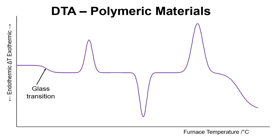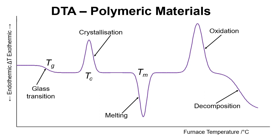There's a glass transition where the baseline changes and we refer to that as Tg for the temperature. We have a crystallization event, Tc, melting which we can refer to as Tm. It's also possible that we'll get oxidation if it's under an oxygen environment and then we'll get decomposition as well.